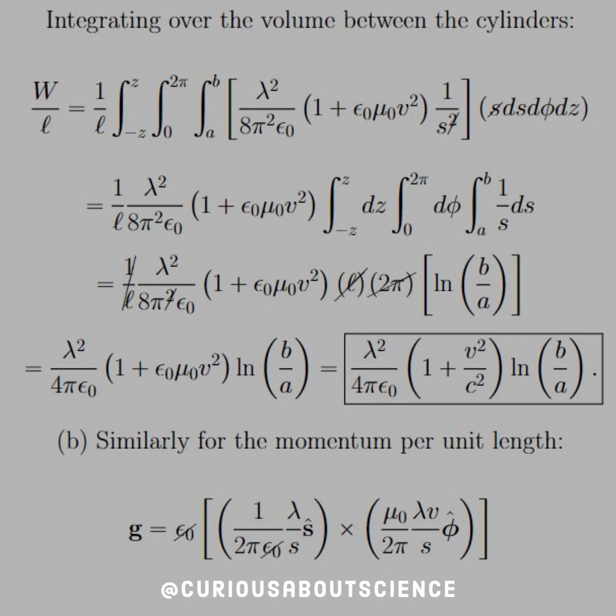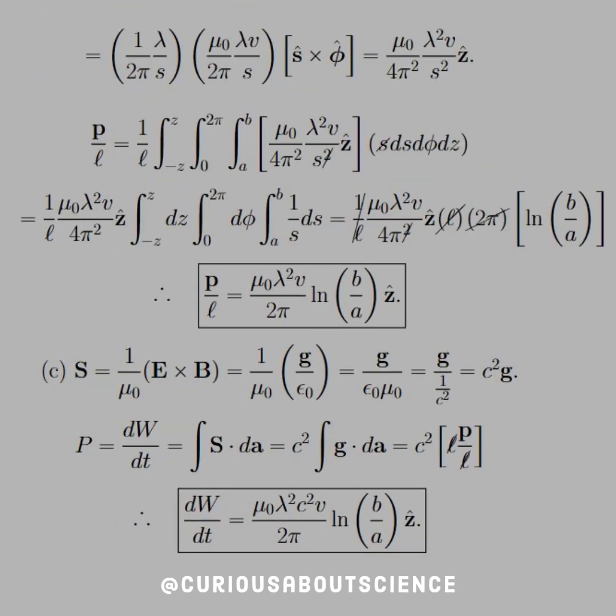So now that we have that, similarly, the momentum per unit length is, well, take the cross product of the fields. Again, you see the epsilon cancel immediately for the E's. Pull out all the constants, S cross phi gives us Z. And then the constants simplified, mu naught over 4 pi squared times lambda squared V over S squared.